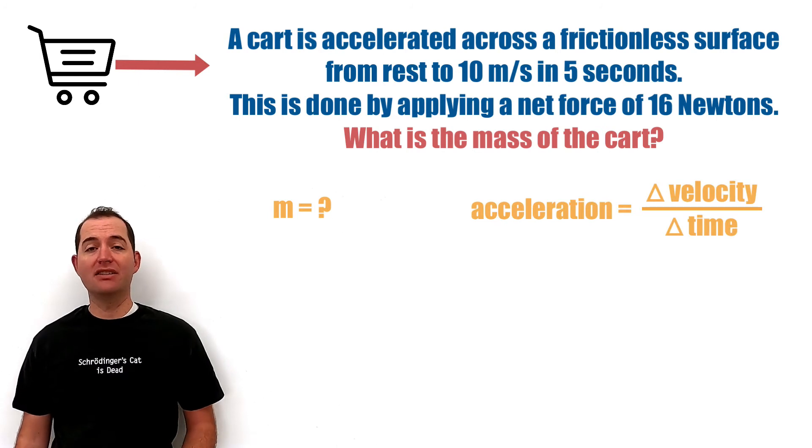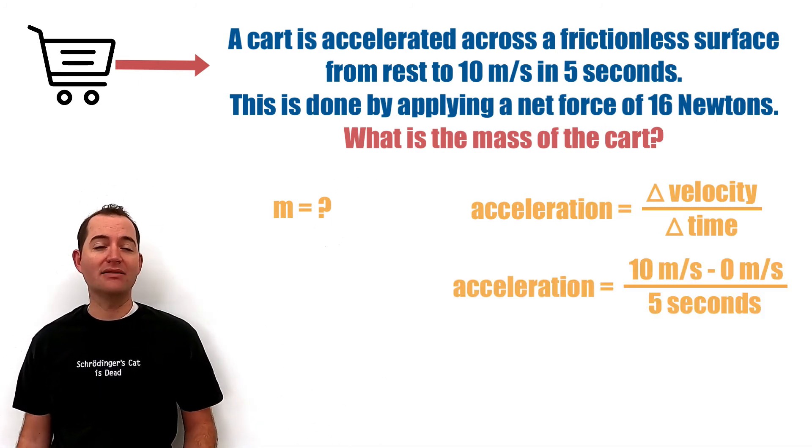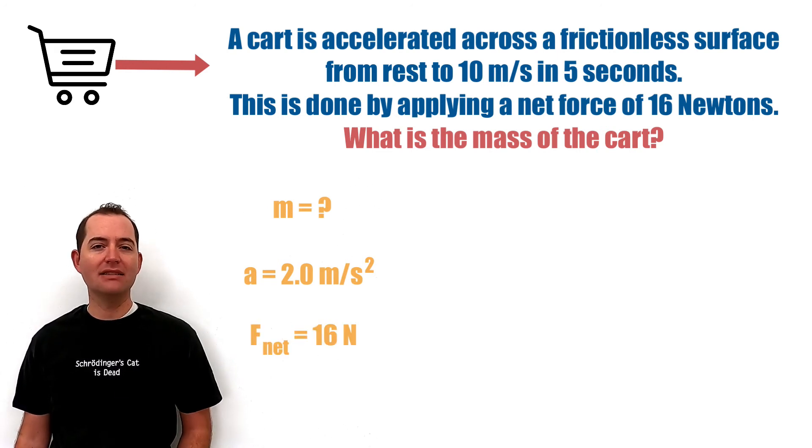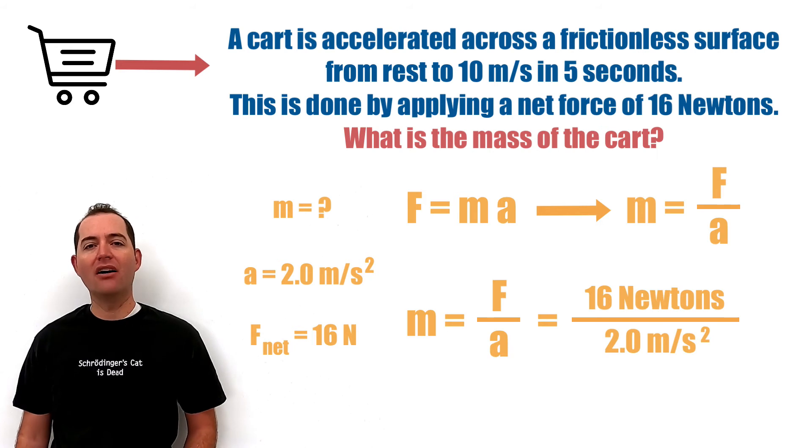We know that acceleration is the change in velocity over time. In this case, we have gone from 0 meters per second to 10 meters per second in five seconds, giving us an acceleration of 2.0 meters per second squared. With a known net force of 16 Newtons, we can calculate the mass of the object. 16 Newtons divided by 2 meters per second squared equals a mass of 8 kilograms.